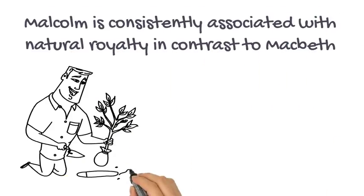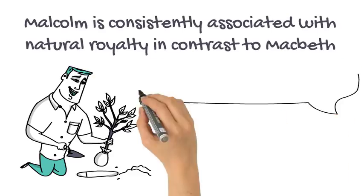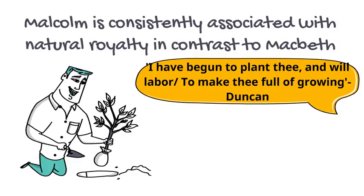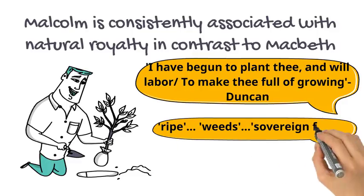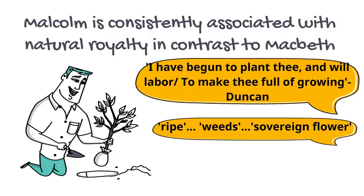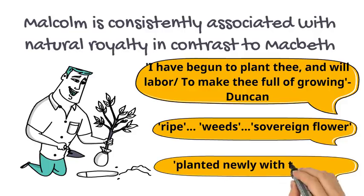Malcolm is also consistently associated with natural royalty, primarily demonstrated through the motif of planting. Whilst Shakespeare has Duncan use imagery of cultivation — 'I have begun to plant thee' — Macbeth only grows 'ripe for shaking' and then into weeds, connoting his wildness and destructive nature. Malcolm, however, is described through the metaphor of a 'sovereign flower' and symbolically associated with the woods of Dunsinane, whose moving towards the castle represents the restoration of natural order. This is then emphasised by Malcolm using the metaphor in his final speech of 'planted newly with the time,' a reference to how Malcolm is now the rightful king, planted into the nation.